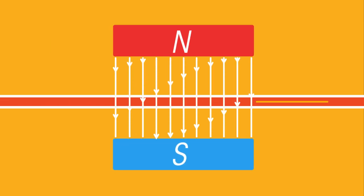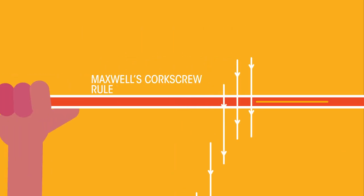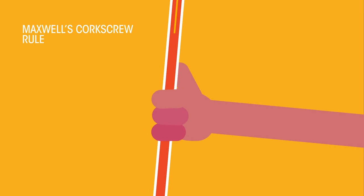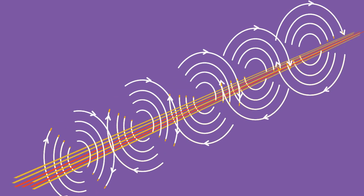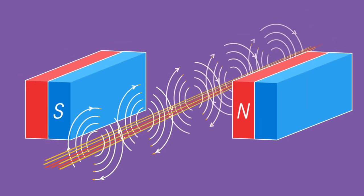The direction of the field can be shown by Maxwell's corkscrew rule. If we add more wires, the resultant magnetic field builds up and becomes stronger. Placing these wires perpendicular to a magnetic field enables us to see how these force lines interact.